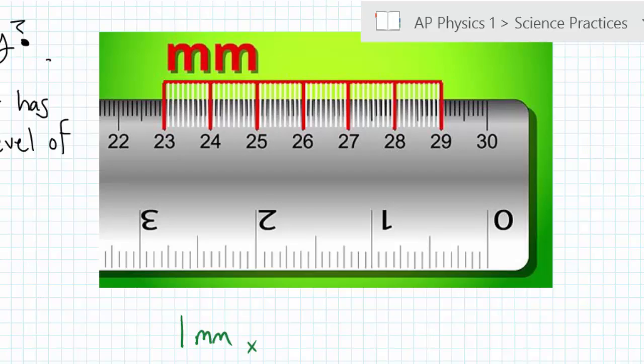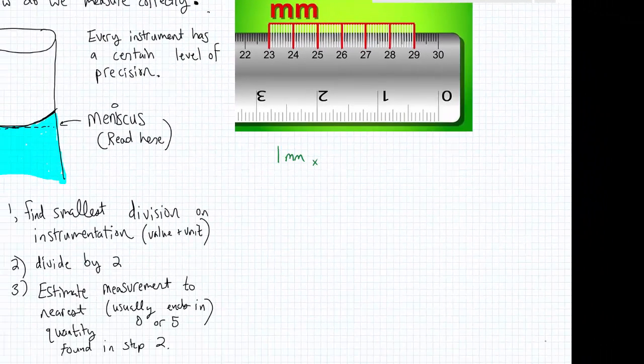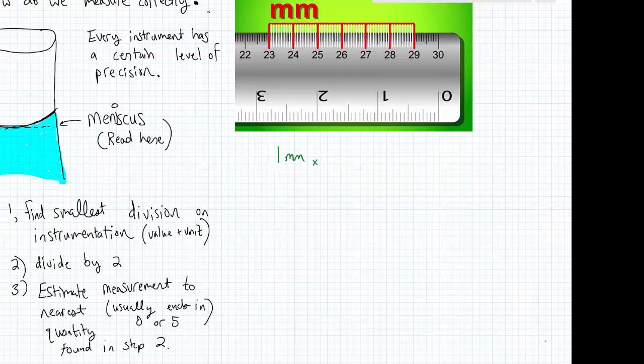Now, I could divide millimeters by 2 and go to the second step. I could take 1 millimeter and divide it by 2. And when I divide that by 2, I get 0.5 millimeters. And so what this would mean is that I would have to stop my estimate. This is step 3. Estimate the measurement to the nearest quantity found in step 2.